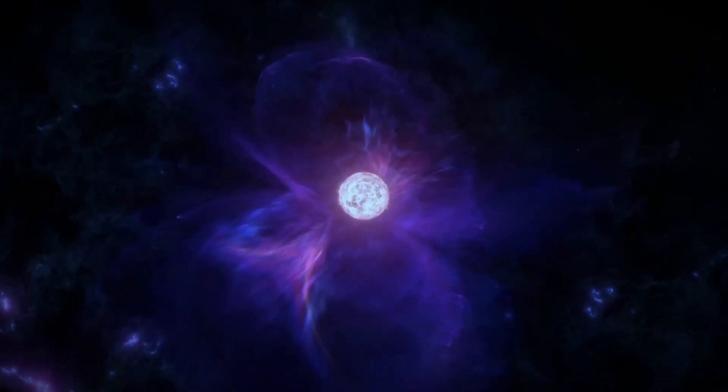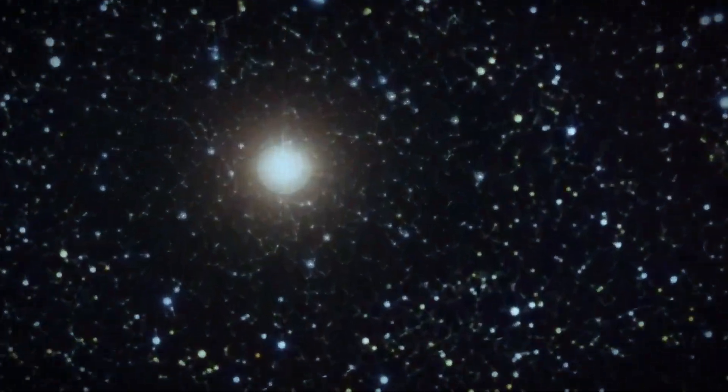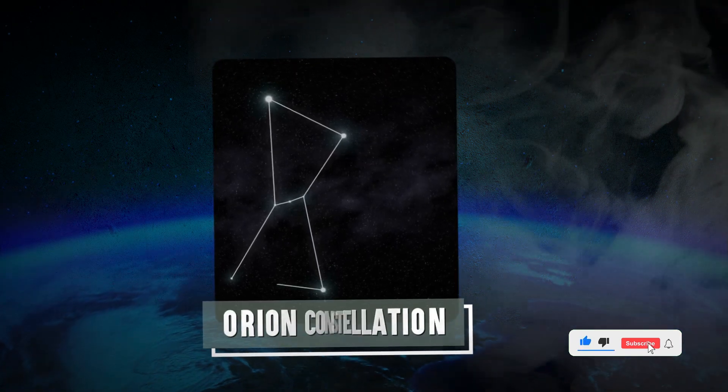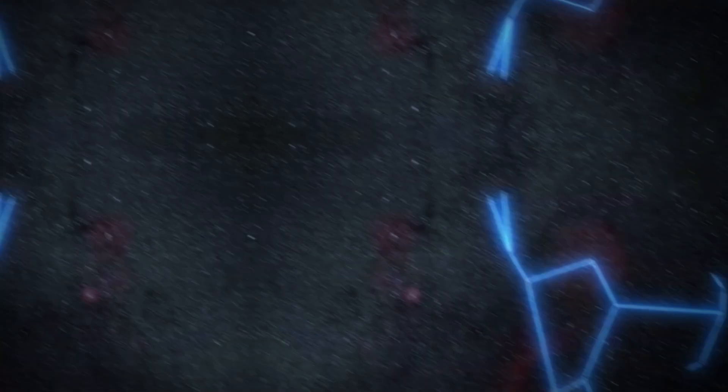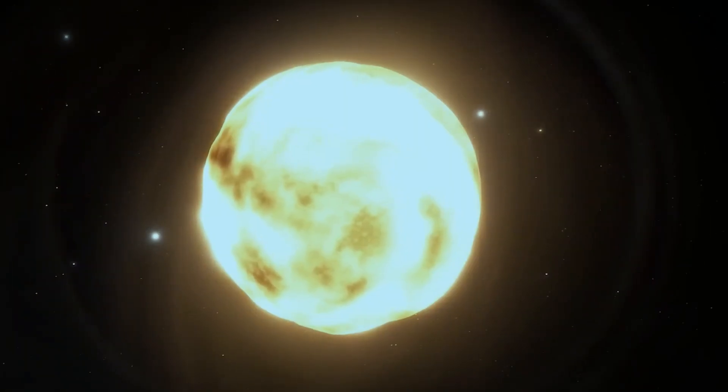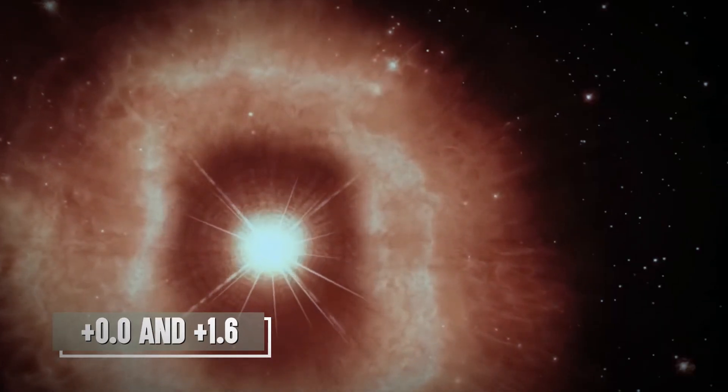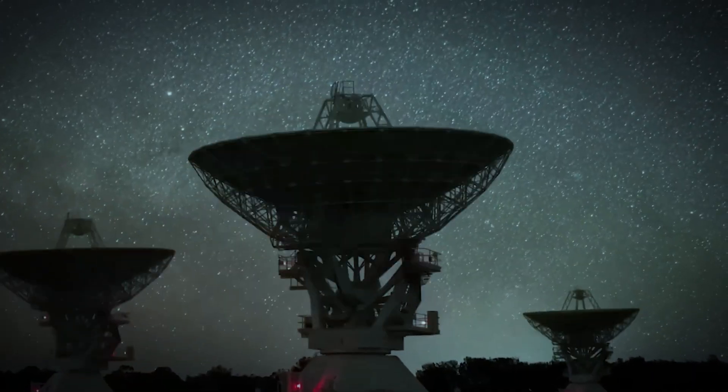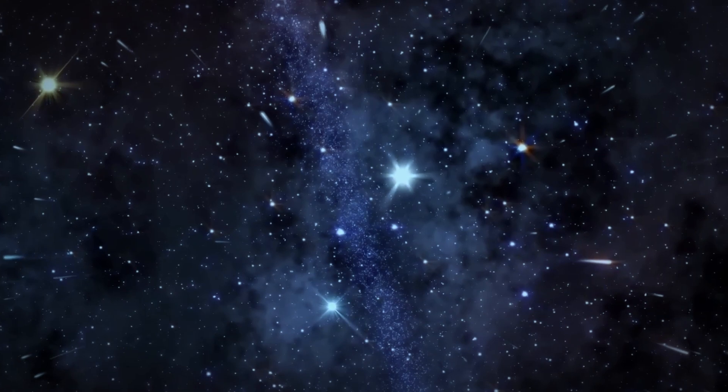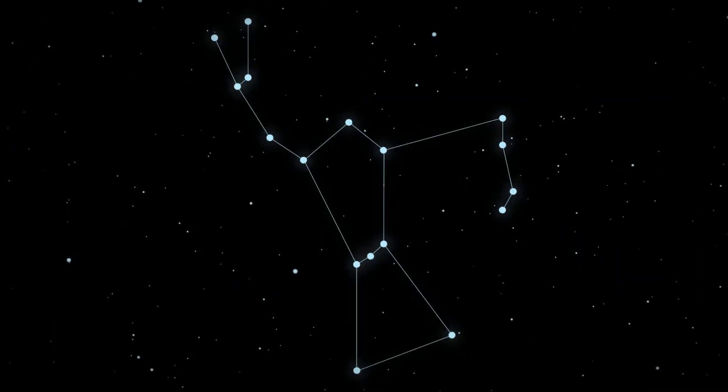Betelgeuse, a red supergiant star classified as spectral type M1-2, stands among the largest stars visible to the naked eye. It typically ranks as the 10th brightest star in the night sky and holds the position of the second brightest star in the Orion constellation, following Rigel. Known for its distinct reddish hue, Betelgeuse is a semi-regular variable star, showcasing the broadest apparent magnitude range of any first magnitude star, fluctuating between plus 0.0 and plus 1.6. In near-infrared wavelengths, Betelgeuse claims the title of the brightest star in the nocturnal canvas. Referred to in the Bayer designation as Alpha Orionis, it is Latinized as Alpha Orionis and abbreviated as Alpha Ori or A Ori.